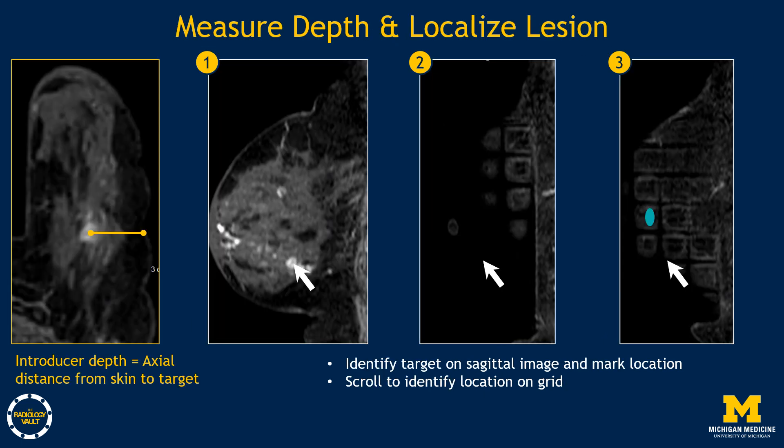Once the target has been identified, measure the distance from the skin to the target on the axial image to determine the depth to set on the introducer. Next, identify the location on the grid where to place the introducer. This can be done using software, or it can be done manually using a worksheet. In the manual localization method, place the mouse cursor over the lesion and, while holding it still, scroll to the plane at the skin's surface showing the grid box, and note the location of the target in the grid relative to the fiducial and mark that on the worksheet.